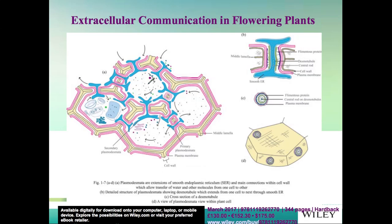Extracellular communication, or cell-to-cell communication, takes place by means of plasmodesmata. Here you can see plasmodesmata shown in blue. Plasmodesmata are actually extensions of the smooth endoplasmic reticulum; they form a tube known as the desmotubule, which passes from one cell to the next.